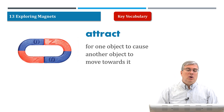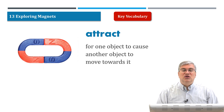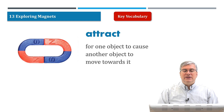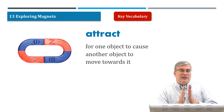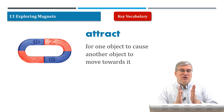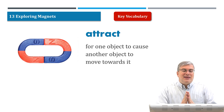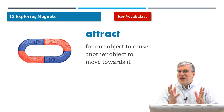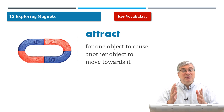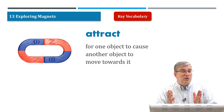Our first word is attract. Attract means for one object to cause another object to move towards it. We're talking about magnetism here, attraction. But attraction can also be between different people.